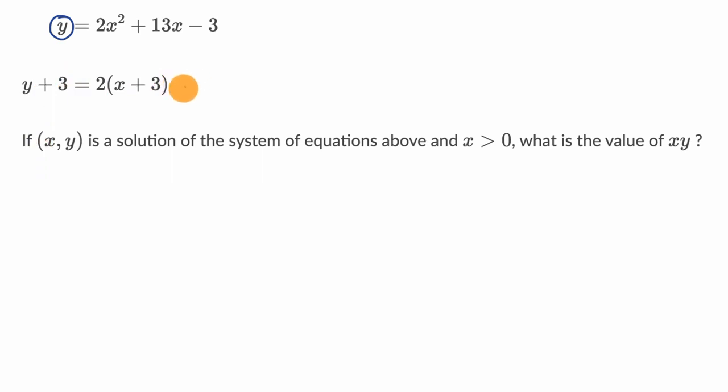So just focusing on this bottom equation, we can subtract three from both sides and then that would lead us to y is equal to two times x plus three minus three. And then I could distribute out this two, and so this would be equal to two x plus six, then minus three, which is of course equal to two x plus three.